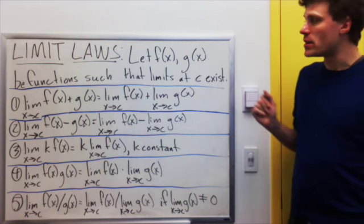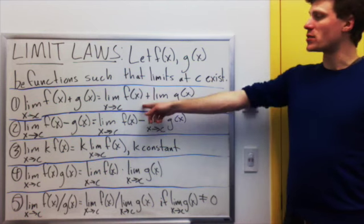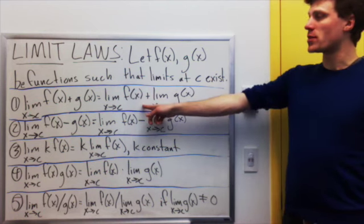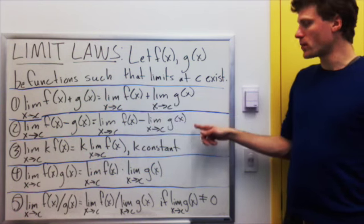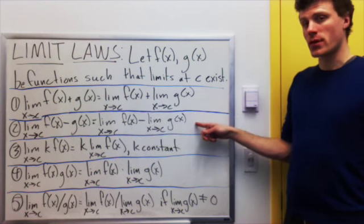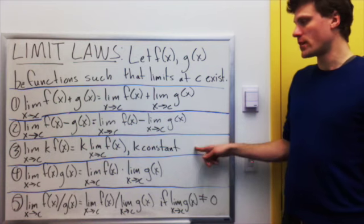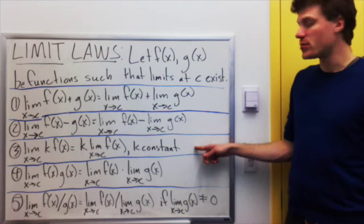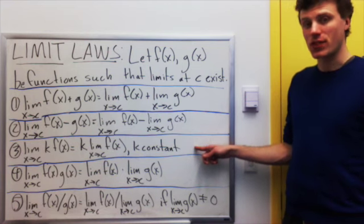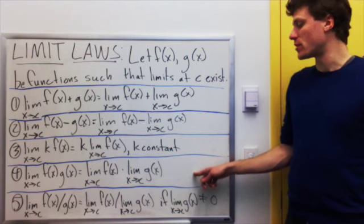We're going to let f and g be two functions such that their limits at c exist. The limit of f plus g is the limit of f plus the limit of g — that's rule one. Rule two is that the limit of f minus g equals the limit of f minus the limit of g. Rule three says that if k is a constant, then the limit of k times f is k times the limit of f. Rule four is that the limit of f times g is the limit of f times the limit of g.